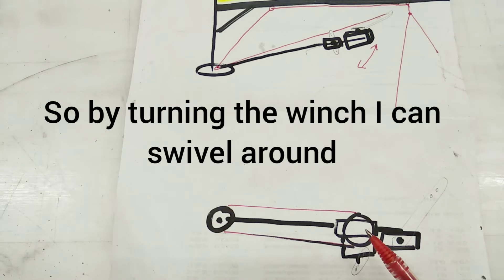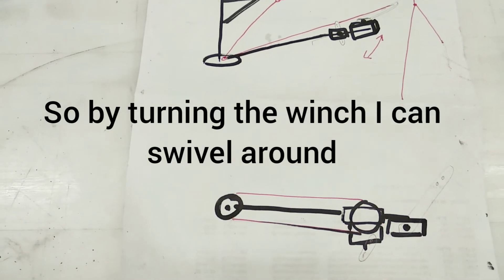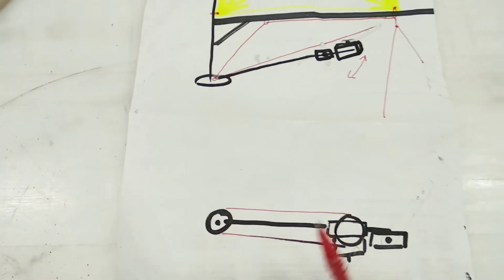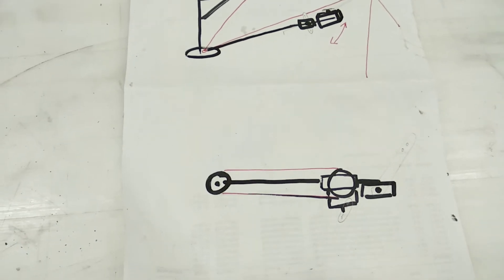So, by rotating the winch, I can swivel around the whole arm from left to right. The second idea is,